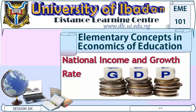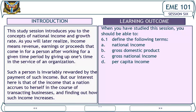Welcome to Study Session 6: National Income and Growth Rate. This study session introduces you to the concept of national income and growth rate. Income means revenue, earnings, or proceeds that come in for a person after working for a given time period, by giving up their time in the service of an organization. Such a person is invariably rewarded by the payment of such income. Our interest here is the income that a nation accrues to herself in the course of transacting businesses.